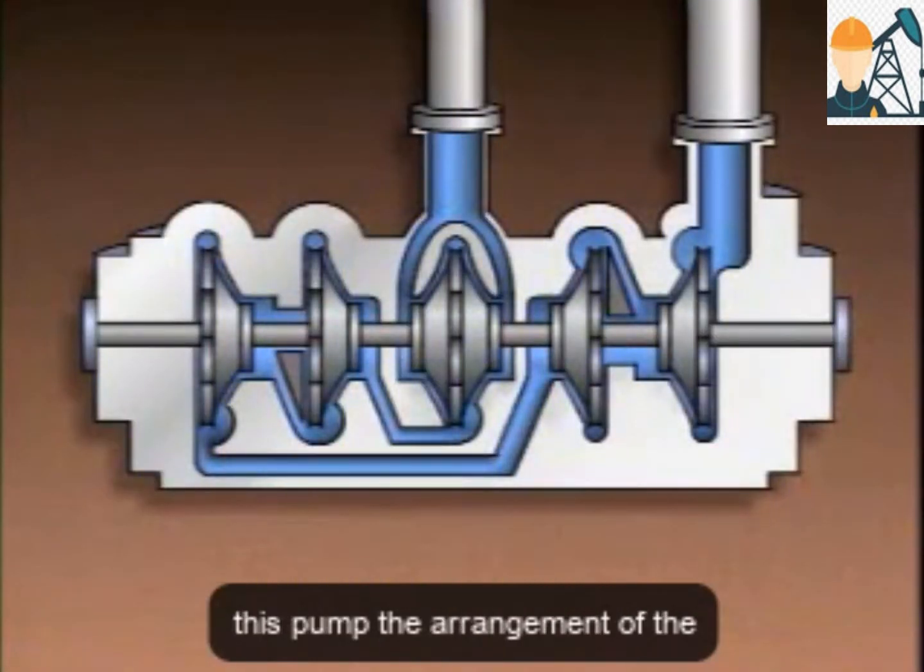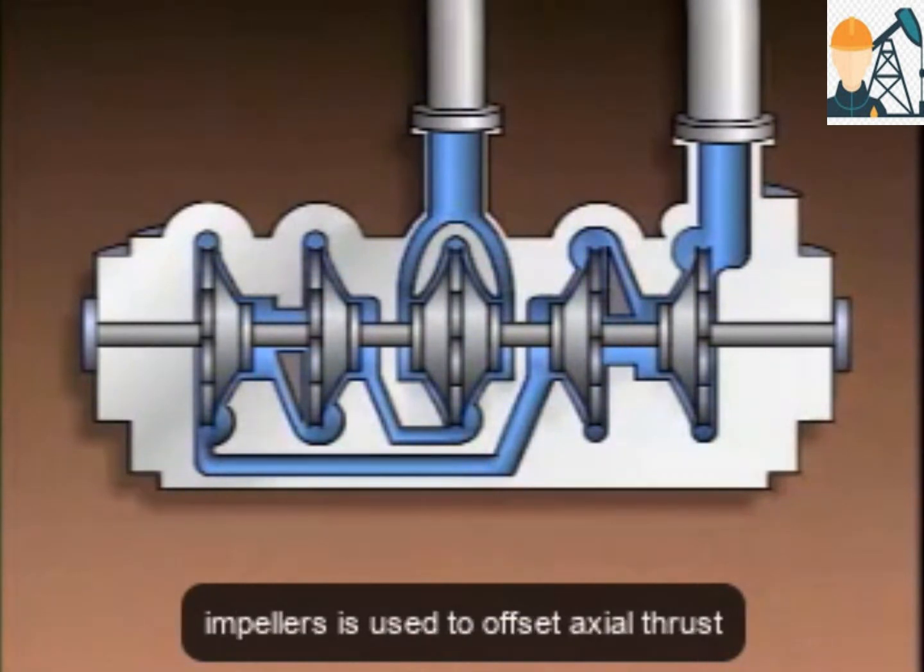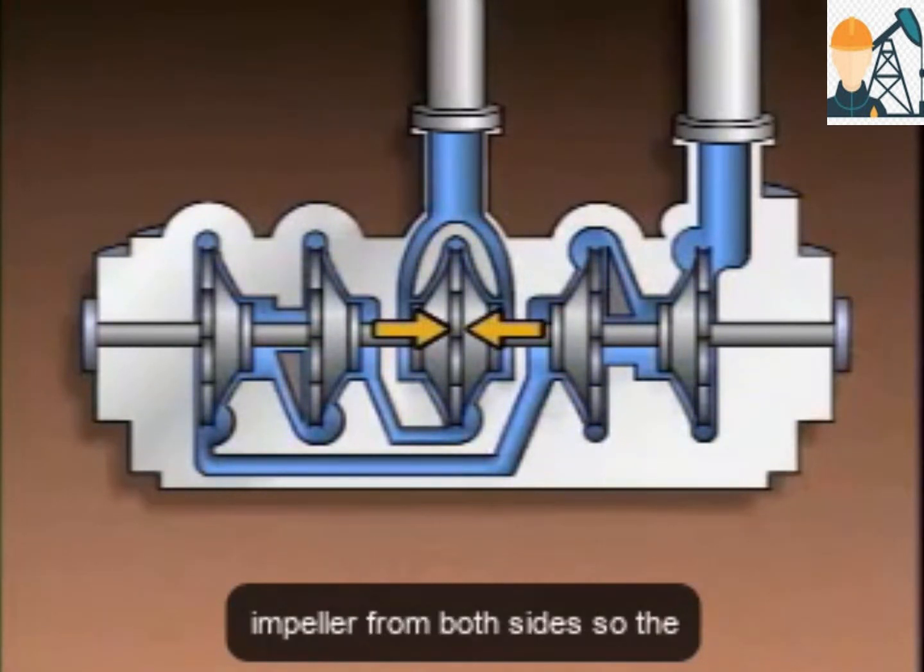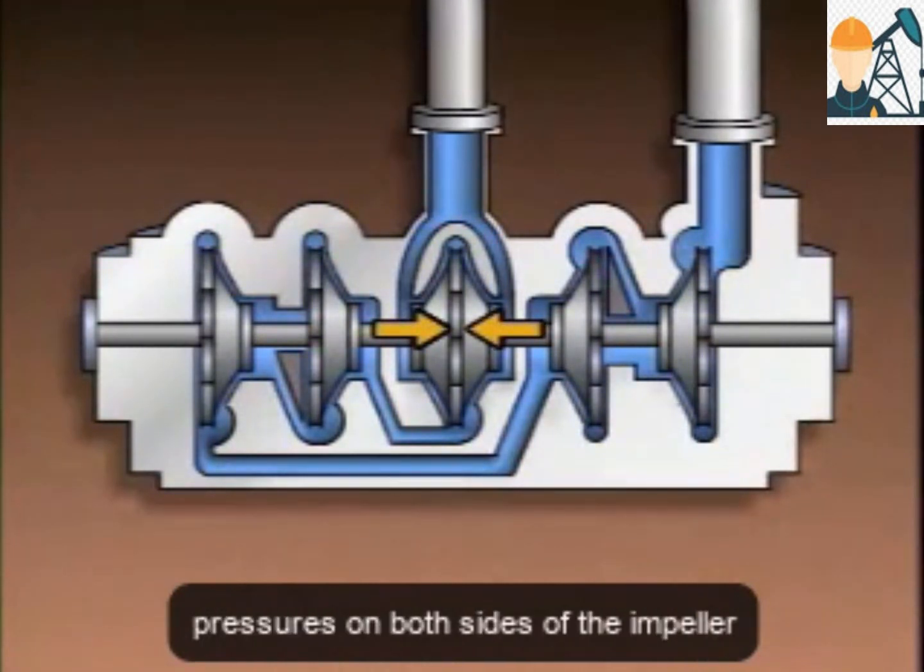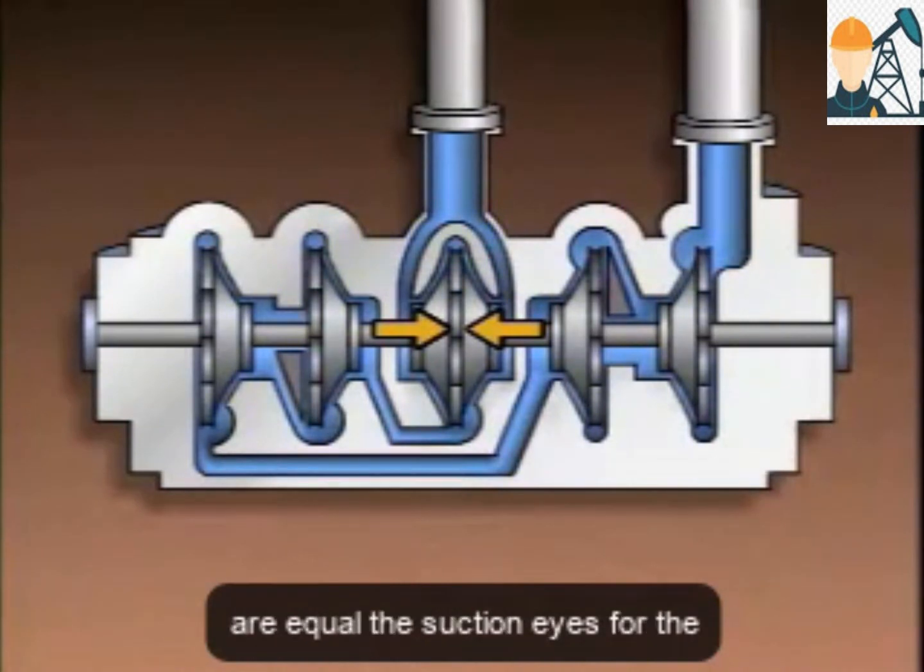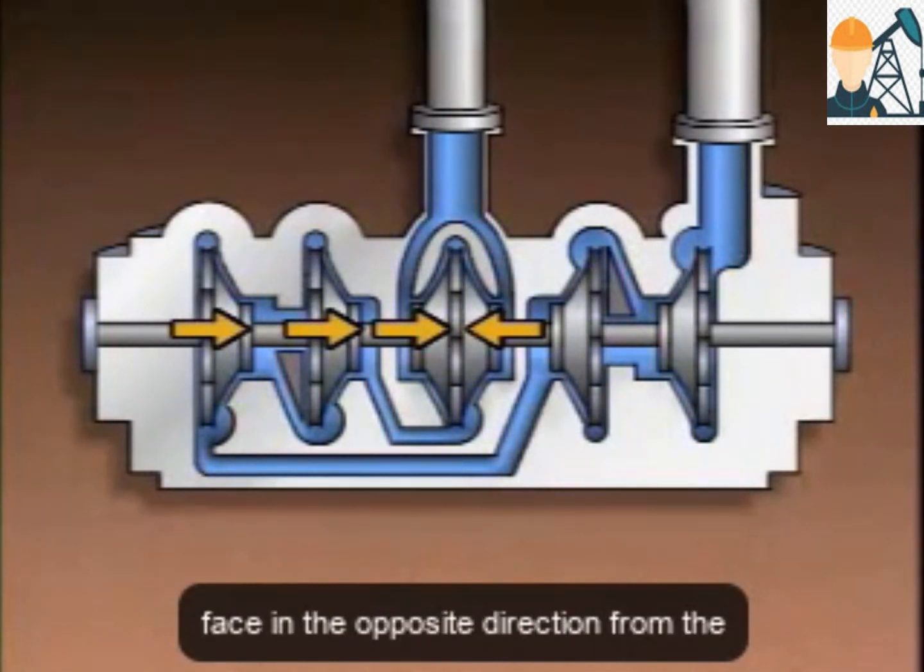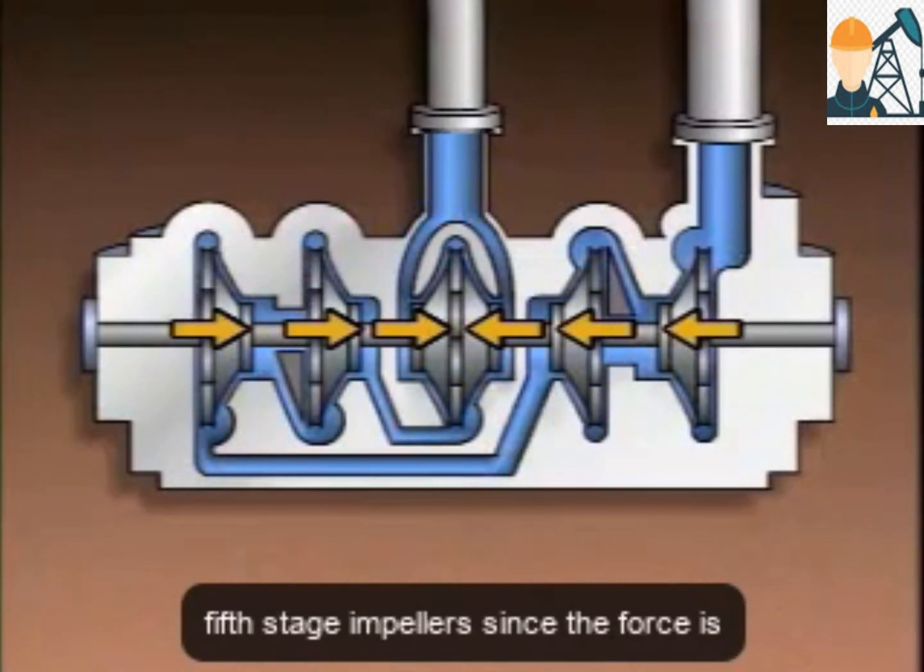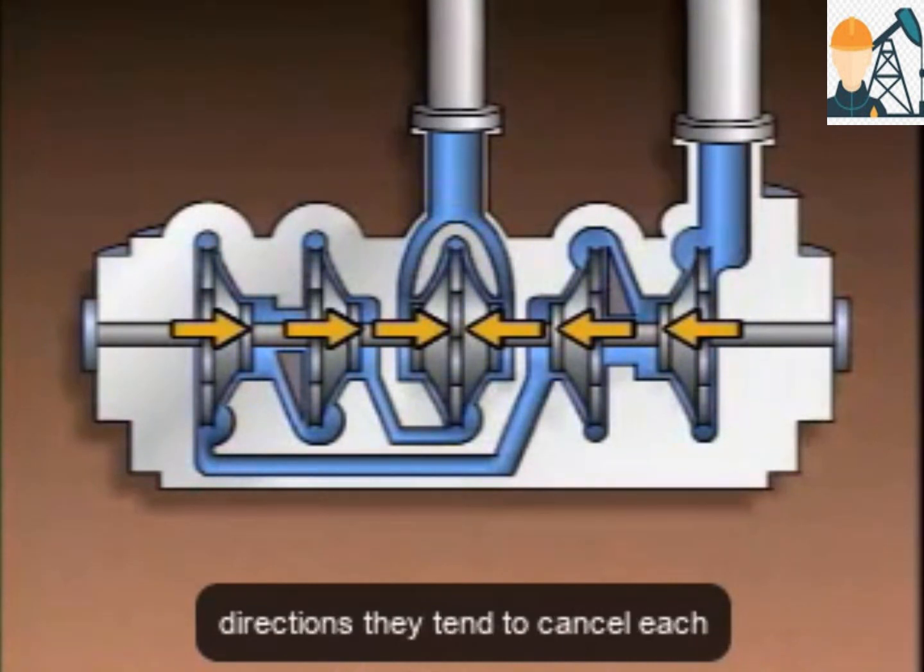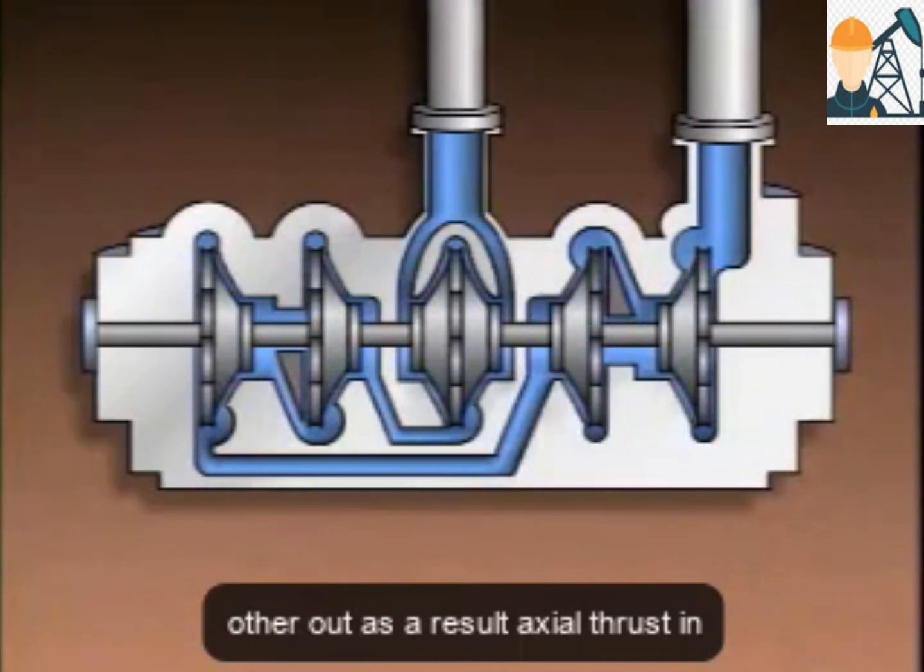Now, on this pump, the arrangement of the impellers is used to offset axial thrust. Processed liquid enters the first stage impeller from both sides. So, the pressures on both sides of the impeller are equal. The suction eyes for the second stage and third stage impellers face in the opposite direction from the suction eyes of the fourth stage and fifth stage impellers. Since the forces caused by axial thrust are in opposite directions, they tend to cancel each other out. As a result, axial thrust in this pump is kept to a minimum.